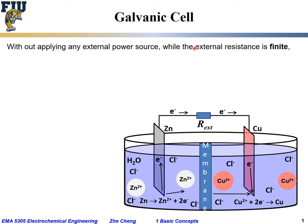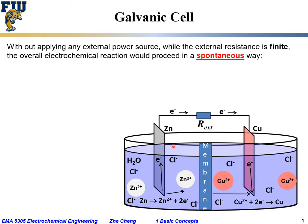If there's no external applied power source and the external resistance is finite — meaning it's not open circuit, so the resistance is small, not infinity — under such conditions the overall electrochemical reaction for this cell would proceed in a spontaneous way. Spontaneous just means in a natural way, just like water flows from higher altitude to lower altitude, or heat conducts from a high temperature region to a low temperature region.